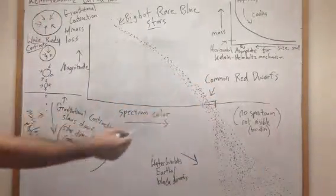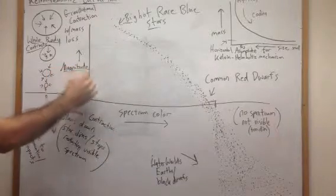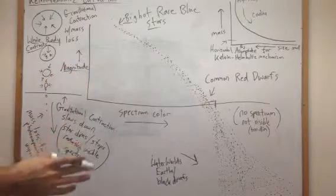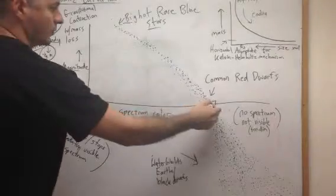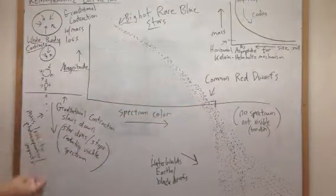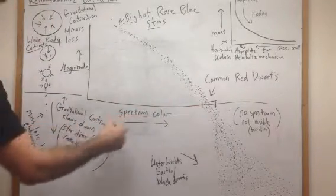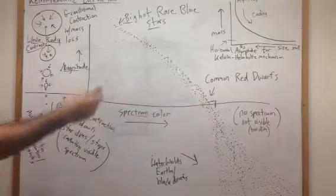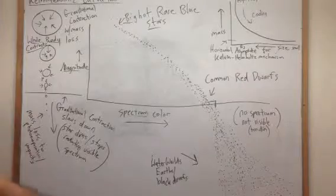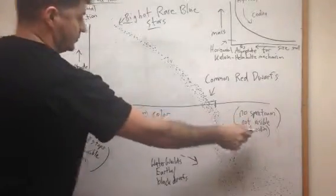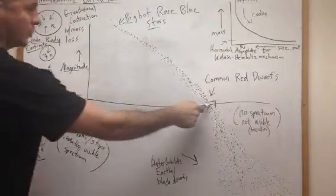And then you have your common red dwarfs, but then there's a magical point when the magnitude of the star, there is no magnitude, it dims to where you can't see it anymore. And that's the biggest problem, is that they think that all stars are luminous, they have spectrums, and they can be seen with telescopes, but they don't have spectrums. They're not visible, they're too dim.